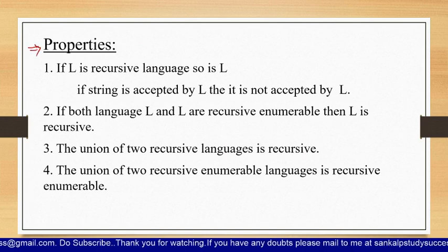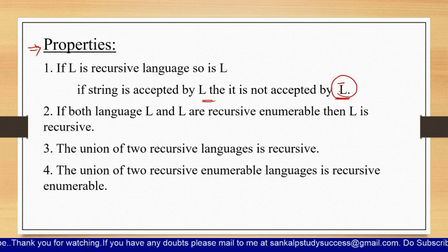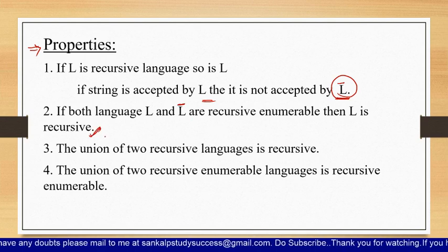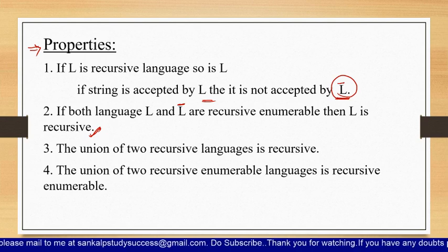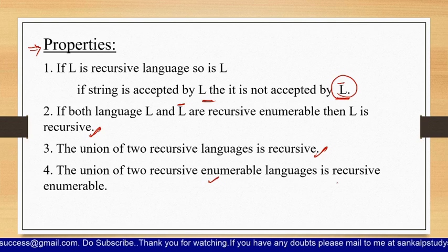Now let us see some properties of recursive languages. If L is a recursive language, so is L-bar (its complement) — if a string is accepted by L then it is not accepted by L-bar. If both L and L-bar are recursively enumerable, then L is recursive. Also, the union of two recursive languages is again recursive, and the union of two recursively enumerable languages is recursively enumerable — so both are closed under union.